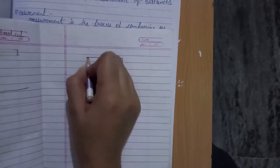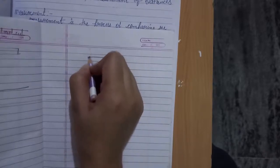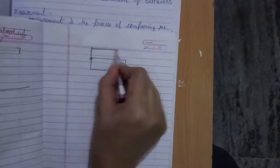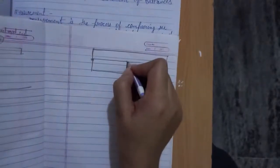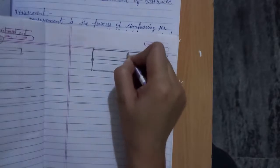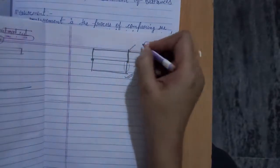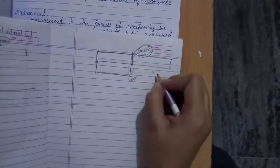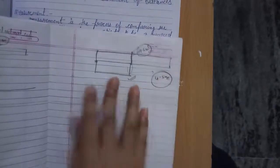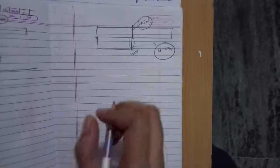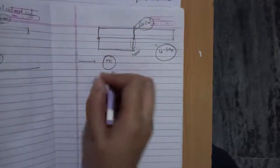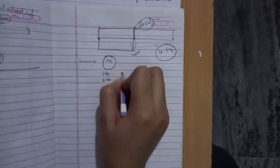We place our scale along this wooden box, starting at the starting point of the wooden box. We place the scale at this point, and we see where the other end of the wooden box touches the scale and read that value. For example, this point is 4.5 meters, so we say that this wooden box has a length of 4.5 meters. We measure our length in meters.